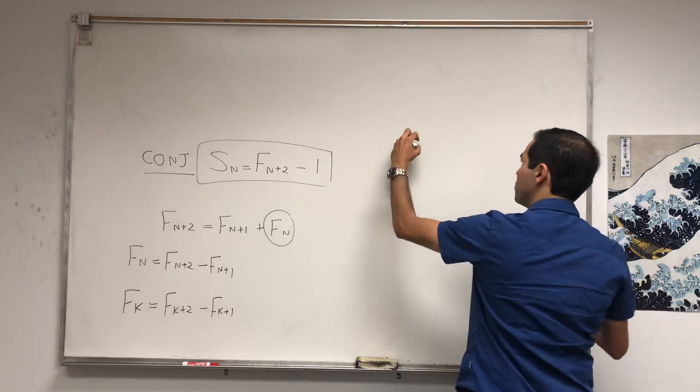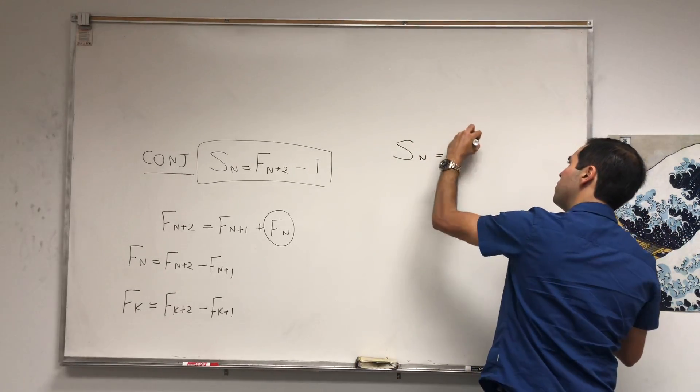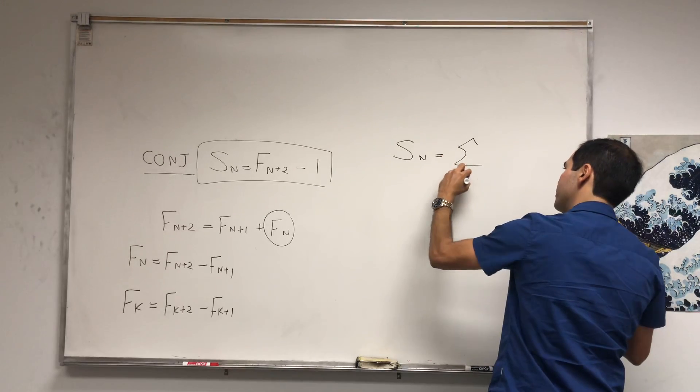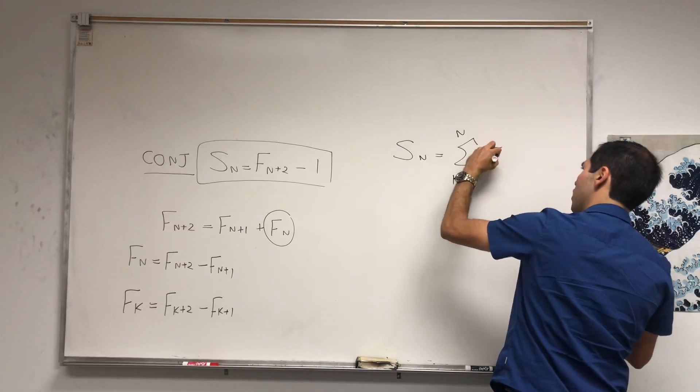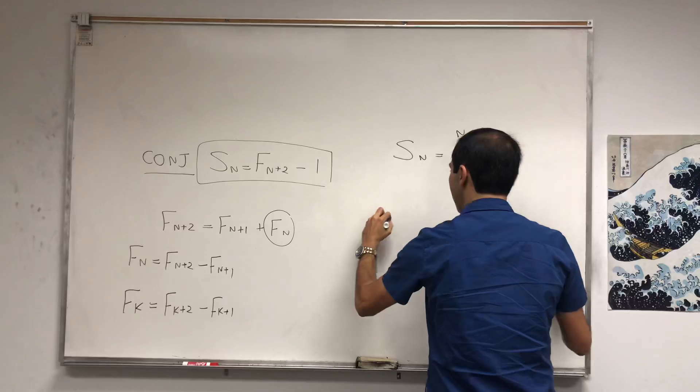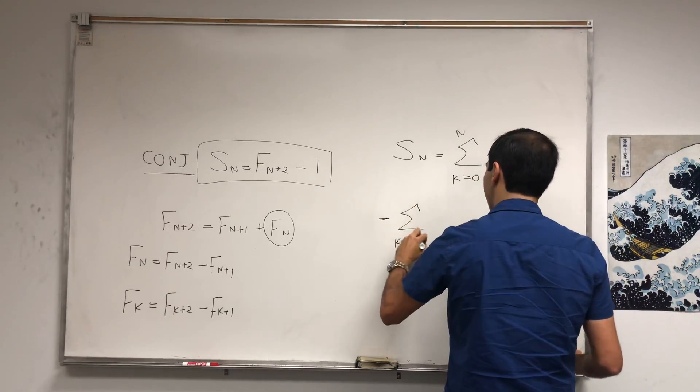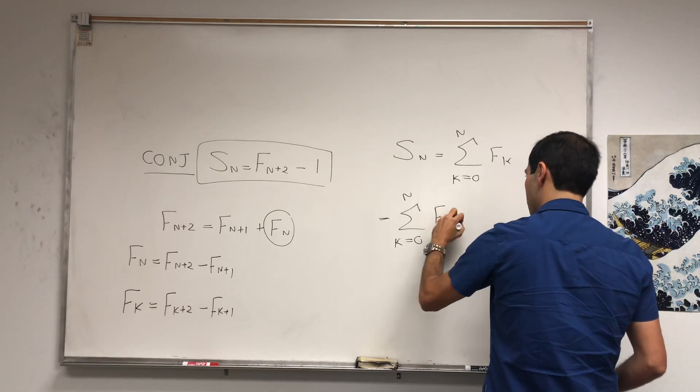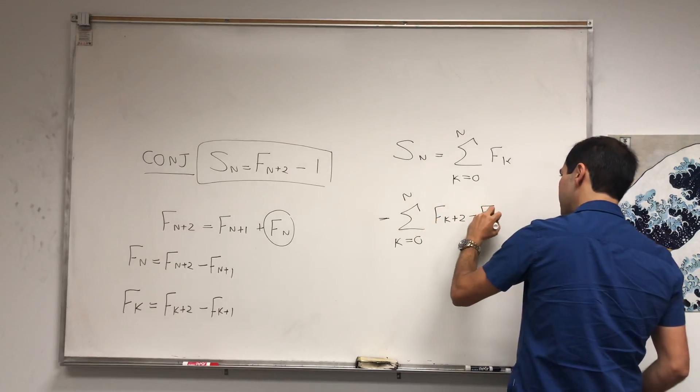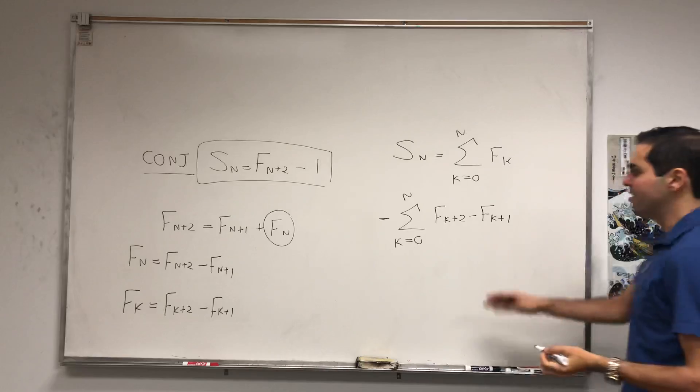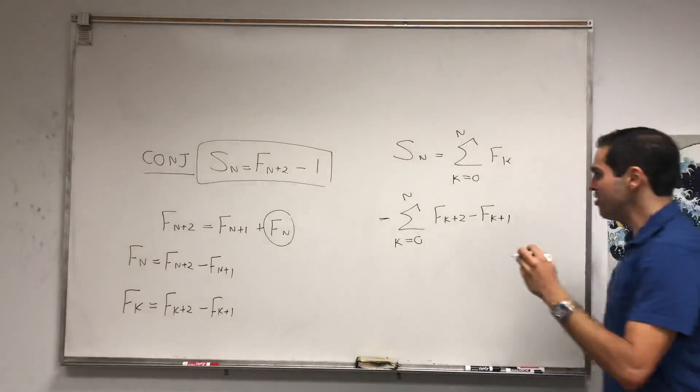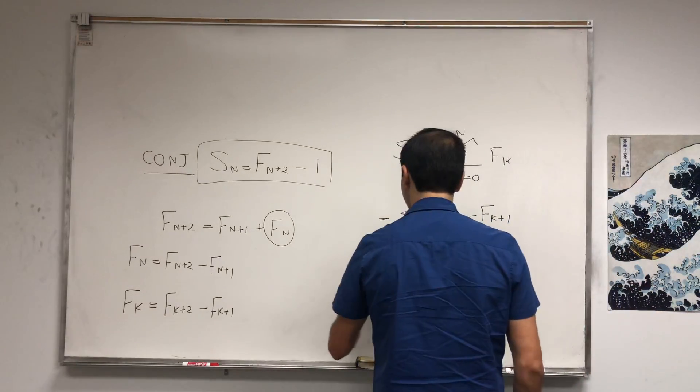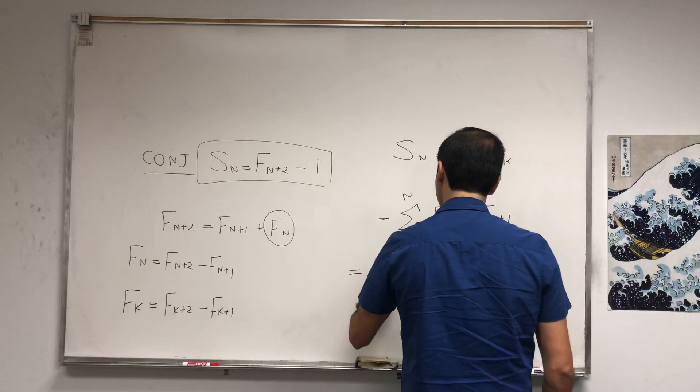So Sn, let me count again—the sum from k=0 to n of Fk. But that is the sum from k=0 to n of Fk+2 minus Fk+1. But let's just write this out and see maybe something telescoping happening. So that's F2 minus F1...